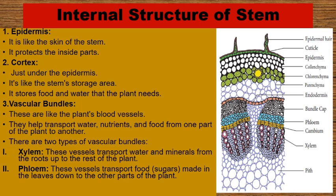2. Cortex — just under the epidermis, it's like the stem's storage area. It stores food and water that the plant needs. You can see the layer of cortex in the diagram shown here.